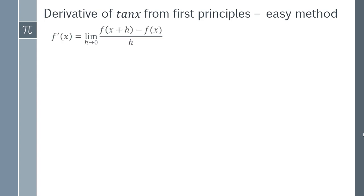So we start with the first principles formula, and then we're going to define our variables. So f of x is simply going to be tan x. And you may recall that tan x is simply sin x over cos x.